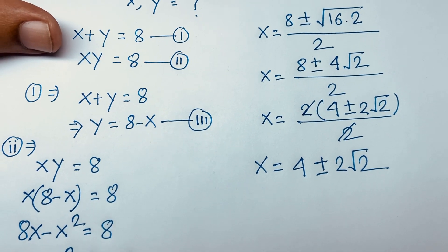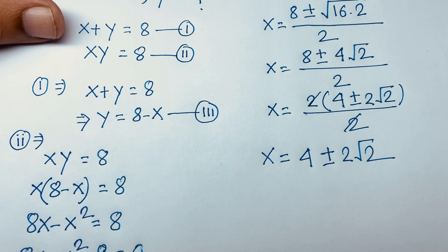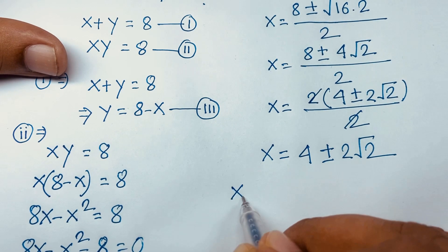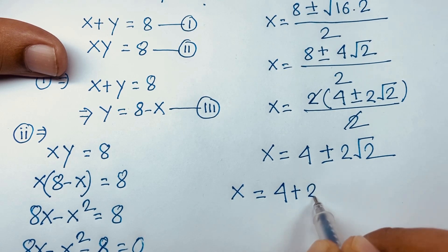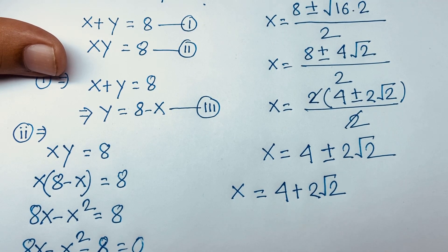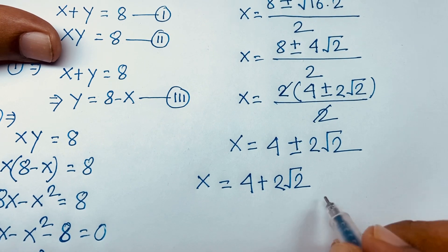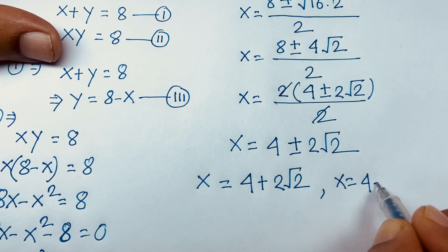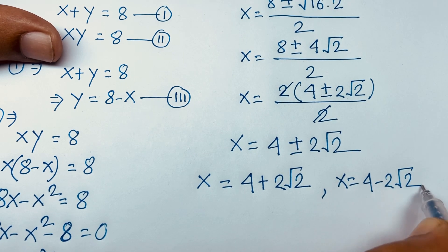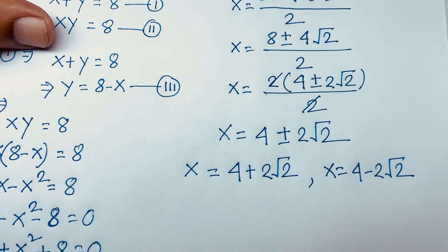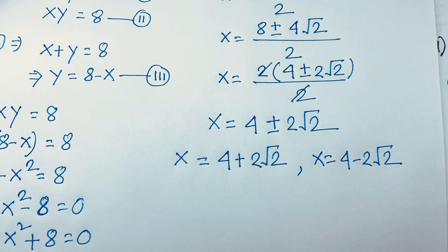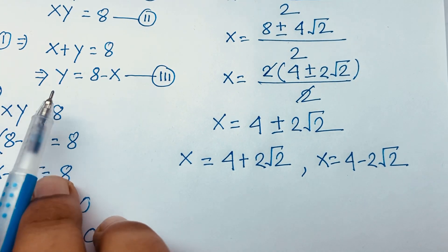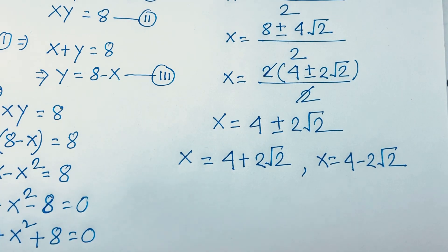This is our final answer — the value of x. So x is equal to 4 plus 2 square root 2, and x is equal to 4 minus 2 square root 2. We have two values. Now we'll find out the value of y, remembering that y is equal to 8 minus x — our third equation.